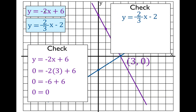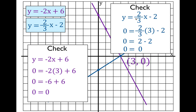Let's check the other one and make sure that point is also a solution for the second line. We substitute in our x and y values and get zero equals two-thirds times three minus two. The threes cancel — or two times three divided by three is two — so two minus two is zero. Zero equals zero. That tells us this point is also on this line and a solution to both equations.